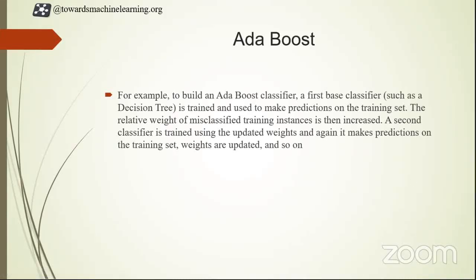To build an AdaBoost classifier, a first base classifier — such as a decision tree — is trained and used to make predictions on the training set. The relative weight of the misclassified samples is increased and passed to the second classifier, the second weak learner. These updated weights are passed to the second model, then the misclassified weights of the second model are passed to the third model. This is how AdaBoost works.